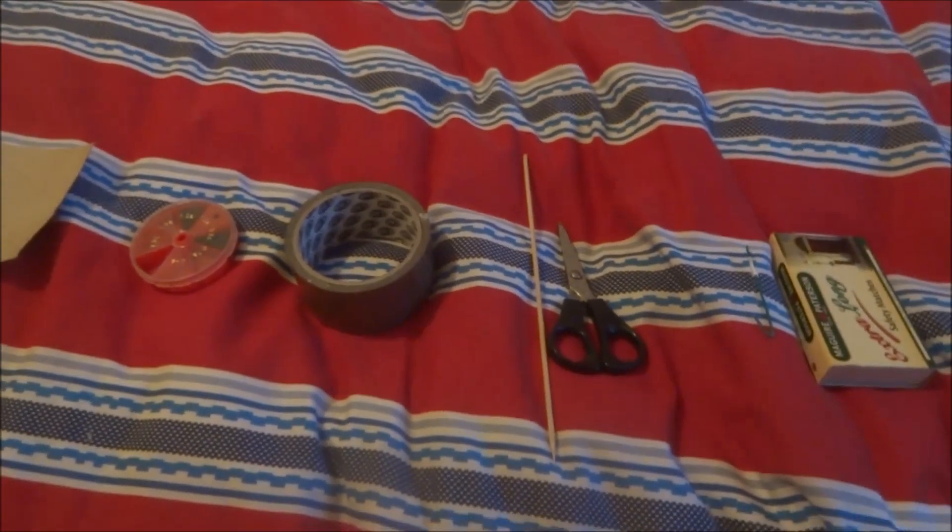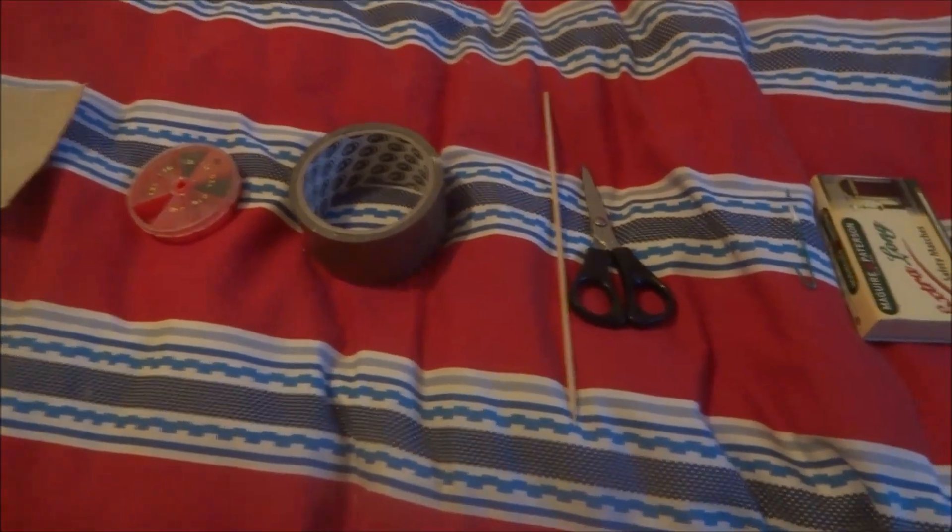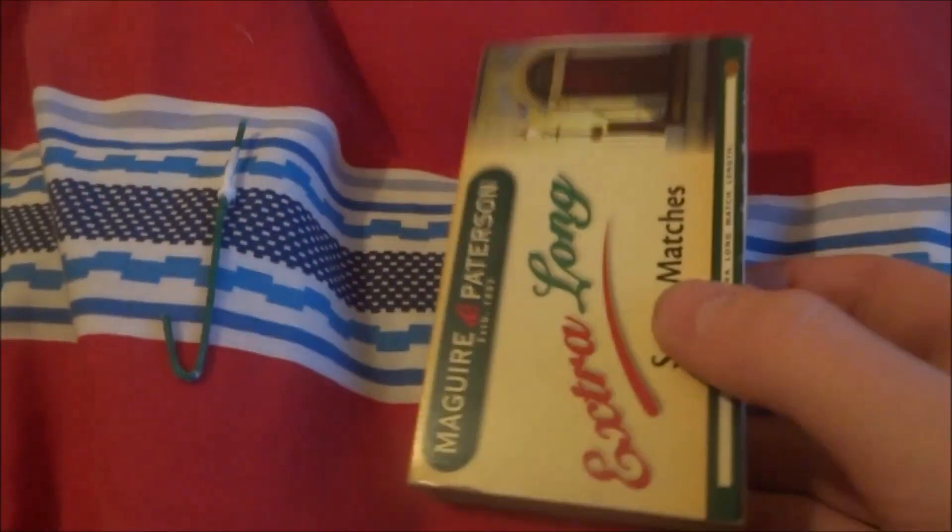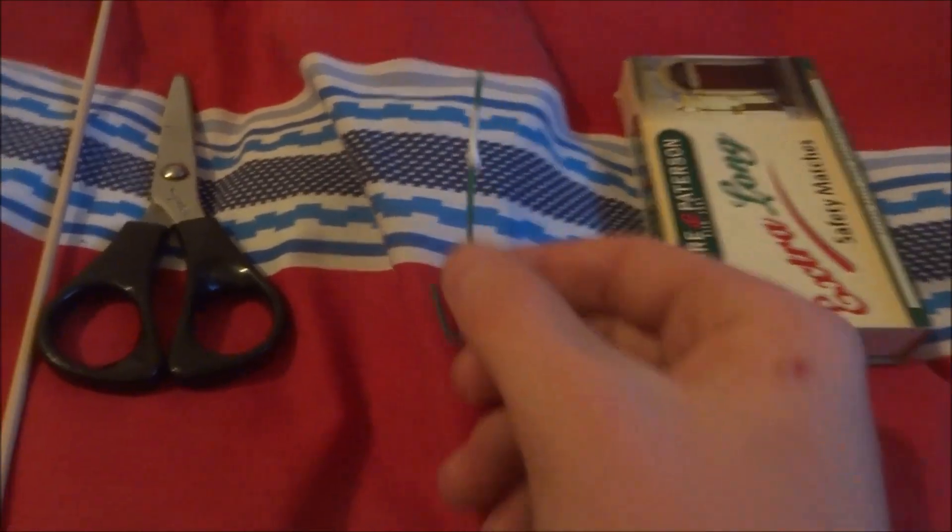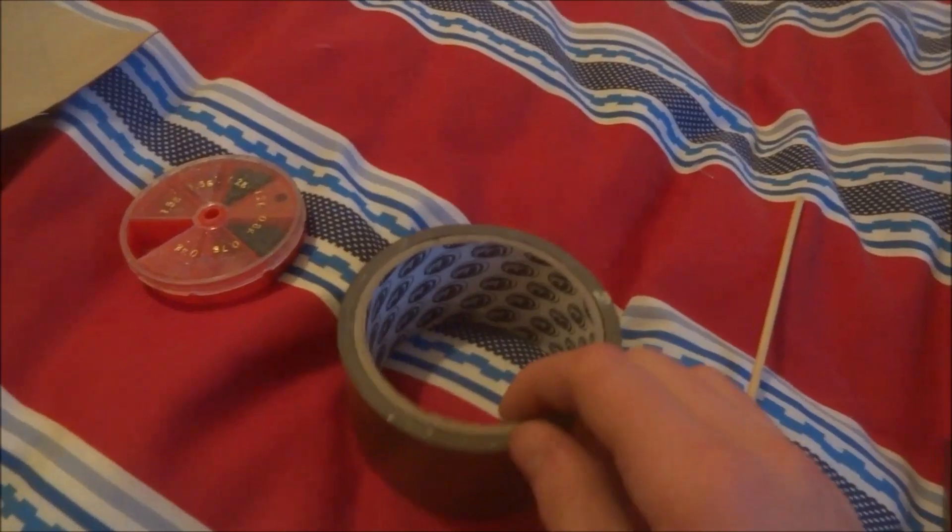Right, so this is how to make a Roman candle type firework thing. Here are the things you'll need. Start with an ignition source, obviously matches or lighter, some fuse - I'm using visco fuse - scissors, skewer, some tape, some black powder rice holes, and I think normal black powder will work as well, and some stars. I'm using crackling stars.